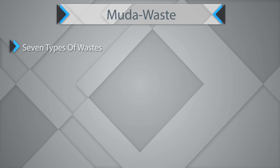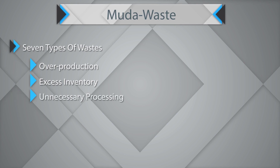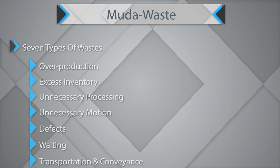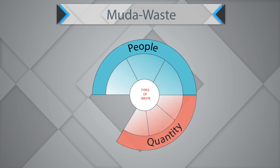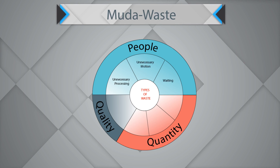There are 7 types of wastes: overproduction, excess inventory, unnecessary processing, unnecessary motion, defects, waiting, and transportation and conveyance. These can be grouped as people wastes — unnecessary processing, unnecessary motion, and waiting — quantity wastes — transportation, overproduction, and excess inventory — and quality wastes — defects. Waste exists in every business process, and one must work at eliminating it.